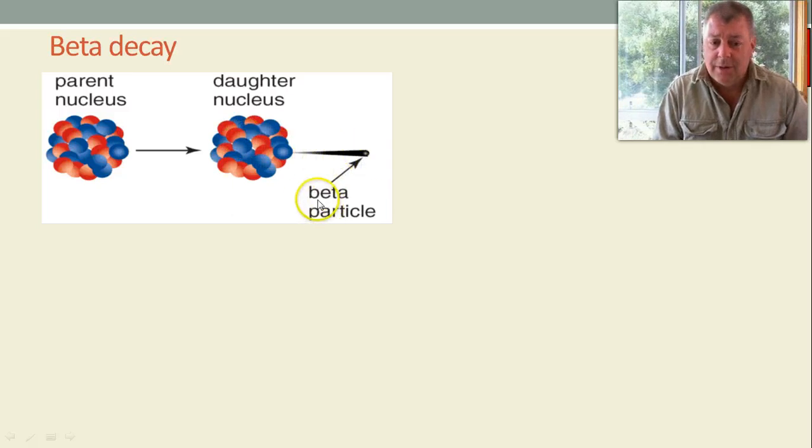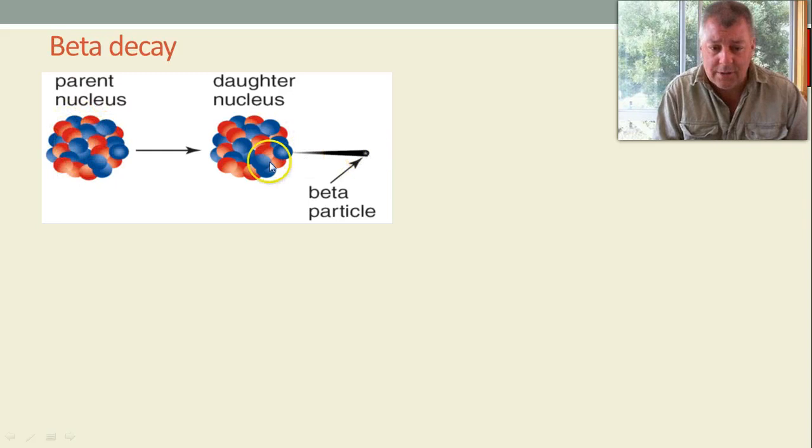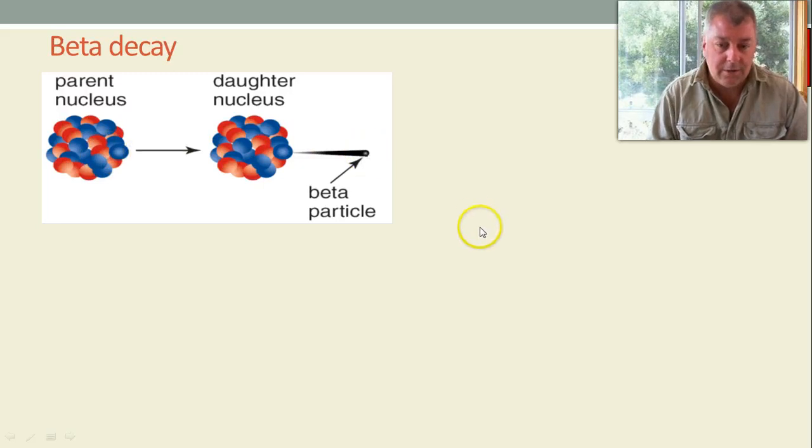Now, you've got to ask yourself, hang on, this is an electron. The nucleus contains protons and neutrons, no electrons. How come an electron comes out of the nucleus? And we'll talk about that shortly. It certainly doesn't belong in the nucleus, and that's why it's kicked out at such a great rate of knots.